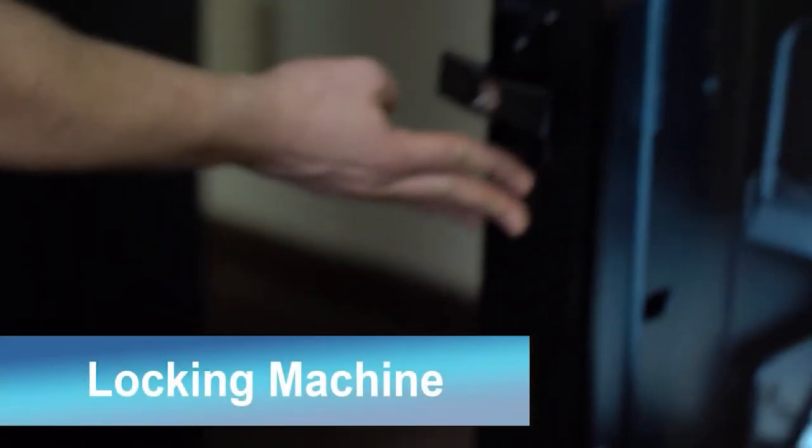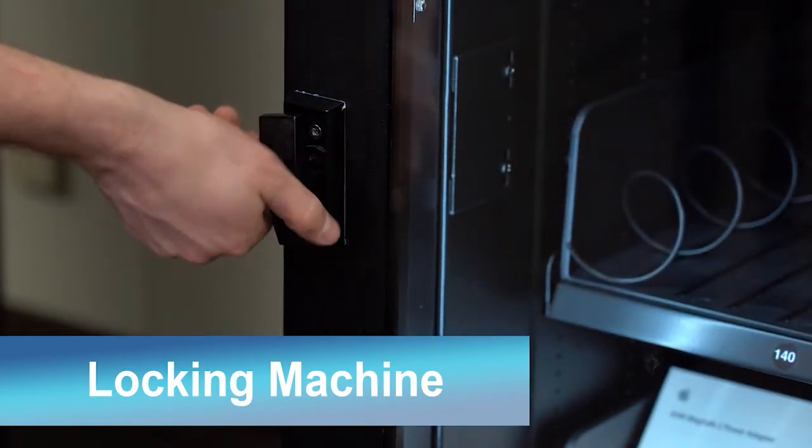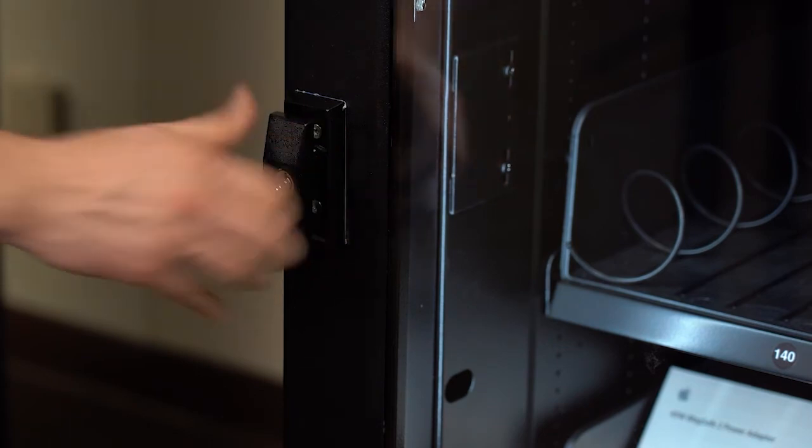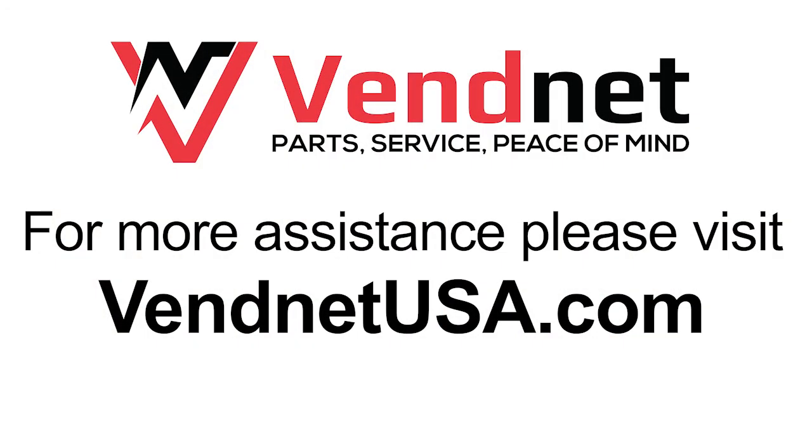To lock the machine, close the door and twist the handle to tighten it. Then when the handle is vertical, push the handle into the door to secure the machine.